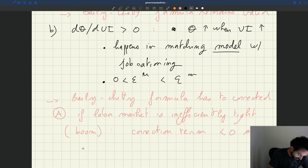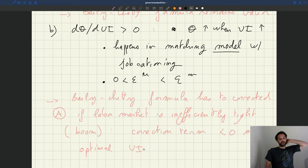So the correction term is negative. So the optimal UI is going to add a negative correction term there, and as a result, optimal UI will be less than in the Bailey-Chetty formula.